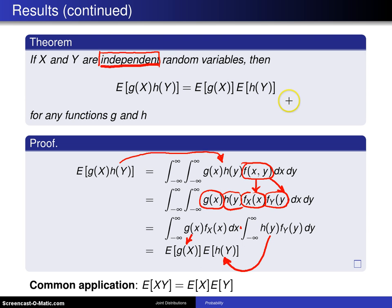And that completes the proof. A common application of this result is as follows: if x and y are independent random variables, then the expected value of the product is equal to the product of the expected values.